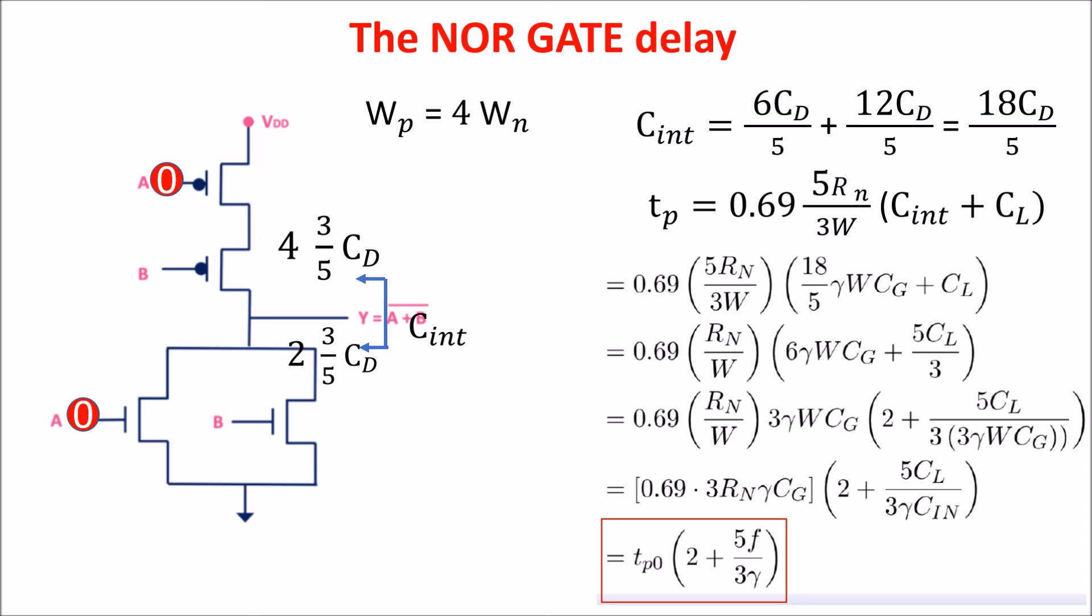We see that for fanout 0, the intrinsic delay is equal to the NAND intrinsic delay, but increasing the fanout, so increasing the load capacitance, the slope is 5/3, so more than the slope of the NAND, which is 4/3.